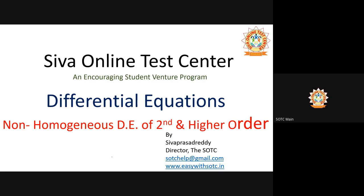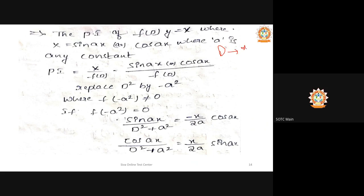Continuing with differential equations — the non-homogeneous linear differential equation of second and higher orders. The next case is where capital X equals sin(x) or cos(x). The particular integral becomes X divided by F(D), that is sin(x) or cos(x) divided by F(D).